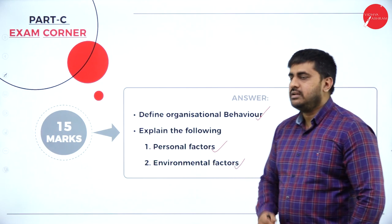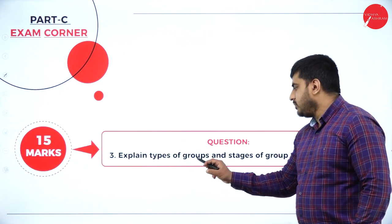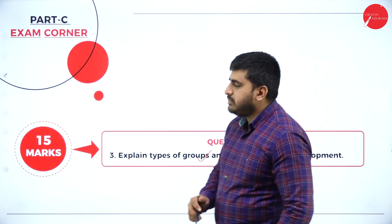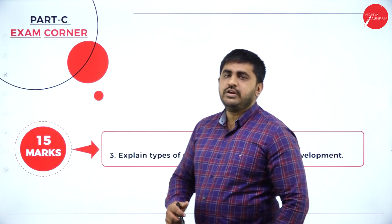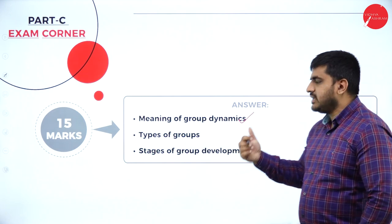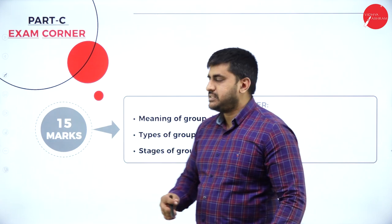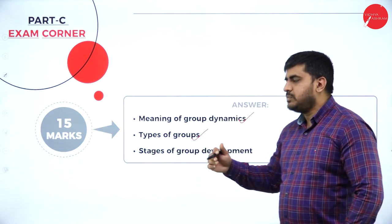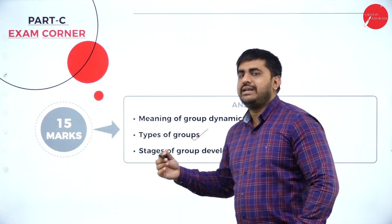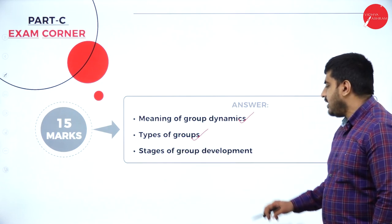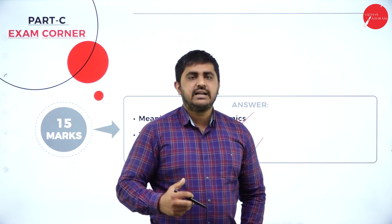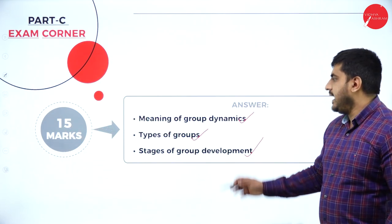Next important 15-mark question: explain the types of groups and stages of group development. How do you write this? First give the meaning and definition of group dynamics. Then explain the different types of groups — formal groups, informal groups, open group, closed group, in-group, out-group — as given in the notes. Then write the stages of group development: forming, storming, norming, performing, and adjourning — 5 different stages. Explain each.